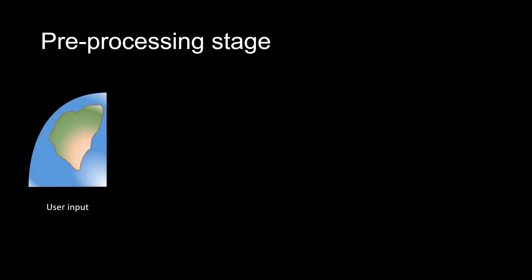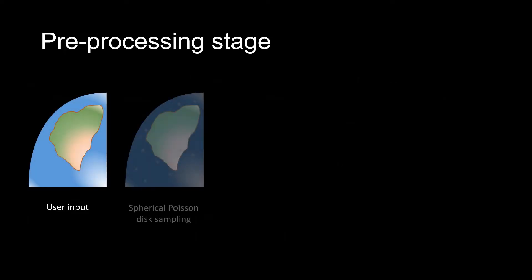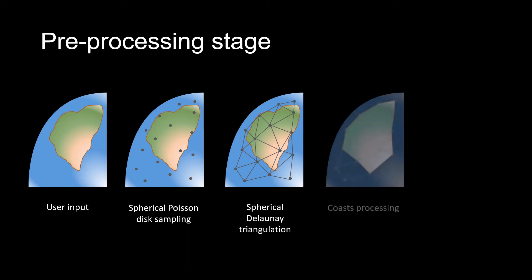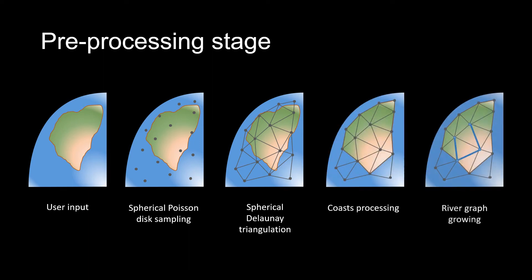The pre-processing is composed of four steps: a sampling of the planet, then a Delaunay triangulation, coastline generation, and finally the base river graph is created, together with hydrographic characteristics such as flow values.